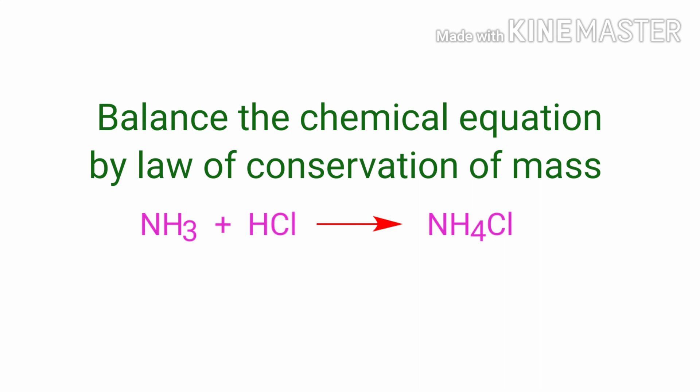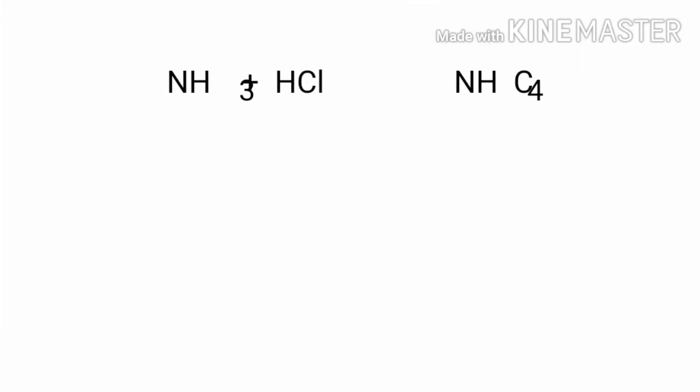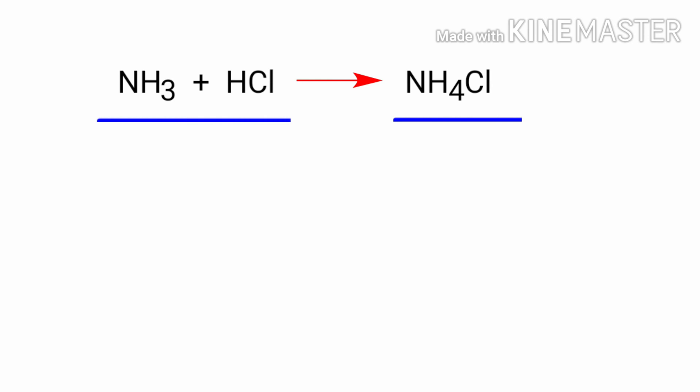Ammonia plus hydrogen chloride gives us ammonium chloride. In this equation, the reactants are ammonia and hydrogen chloride, and the product is ammonium chloride.